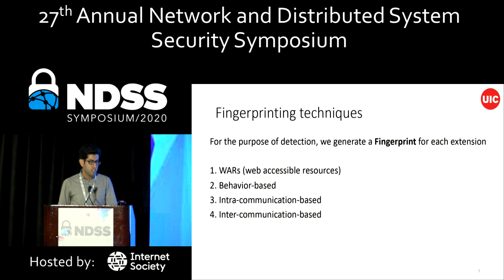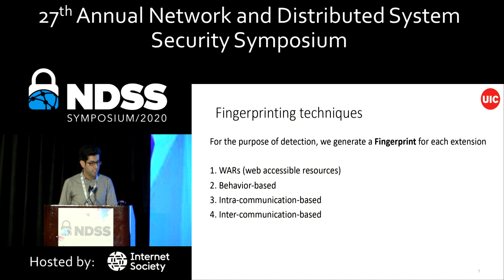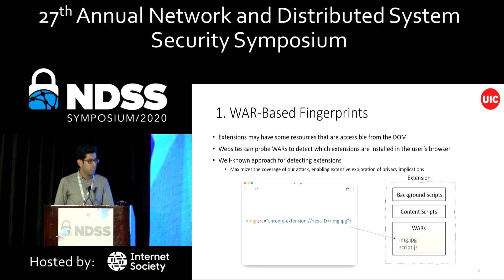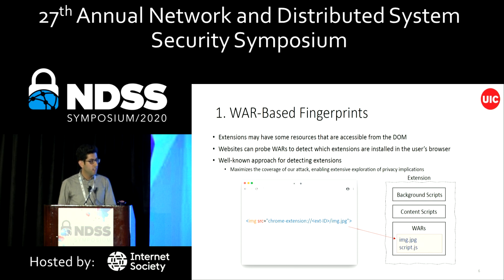To be able to detect the extensions, we first generate a fingerprint for each extension. We have four different techniques for generating fingerprints. The first one is web accessible resources. The second one is the behavior of the extensions. The next two approaches are based on the communication of the extensions, which are two novel techniques. Web accessible resources is a straightforward and well-known approach, and we added it to maximize the coverage of our attack.